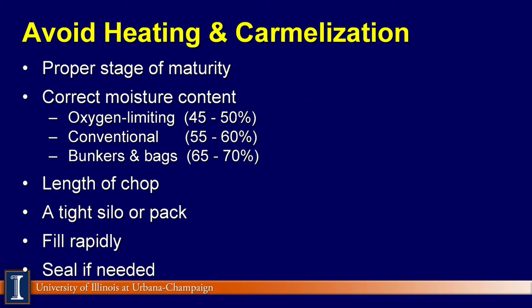Start by harvesting forages at the proper stage of maturity. Alfalfa should be harvested at the bud to early bloom stage of maturity and stored at the correct moisture content. The moisture content of alfalfa silage should be 45–50% when stored in oxygen-limiting structures, 55–60% in conventional silos, and 65–70% in bunker silos and silo bags.